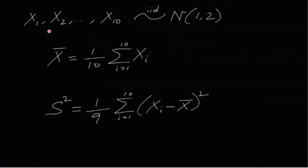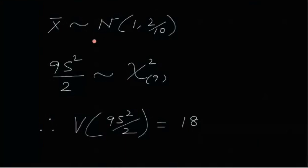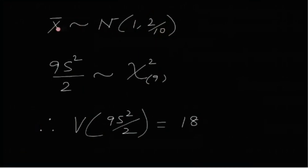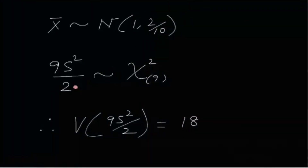For a normal distribution, we know that the sample mean X-bar follows Normal with the same mean but variance divided by the sample size — so X-bar follows Normal(1, 2/10). We also know that (n−1)·S²/σ² follows chi-square with n−1 degrees of freedom. Here n=10, so n−1=9, and σ²=2, meaning 9S²/2 follows chi-square(9).